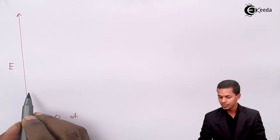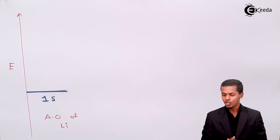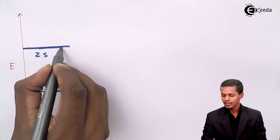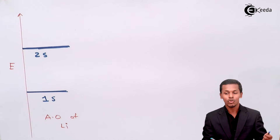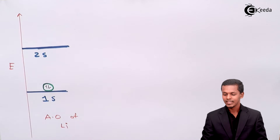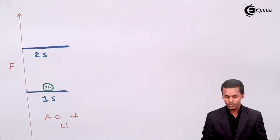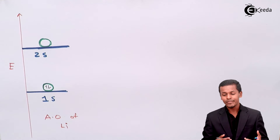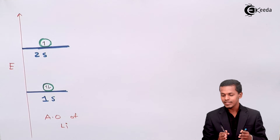So I am going to represent this on the diagram. The 1s orbital has lower energy compared to the 2s orbital. The 1s orbital consists of two electrons, which I represent with a circle containing two electrons. The 2s orbital consists of only one orbital, also represented as a circle. The 2s subshell consists of only one electron, so I am filling it with one electron. This represents the atomic orbital of lithium.